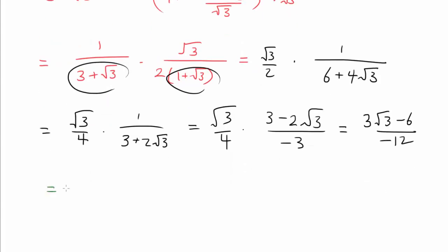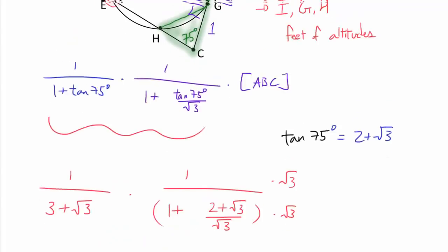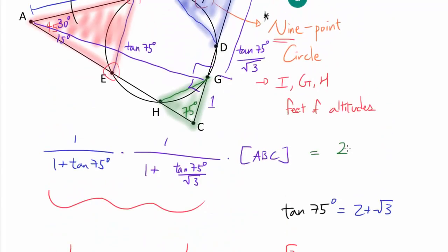And we can divide the top and bottom by negative 3, getting us (2 minus square root of 3) over 4. So finally, we have it. So we know this is (2 minus square root of 3) over 4 times area of ABC.